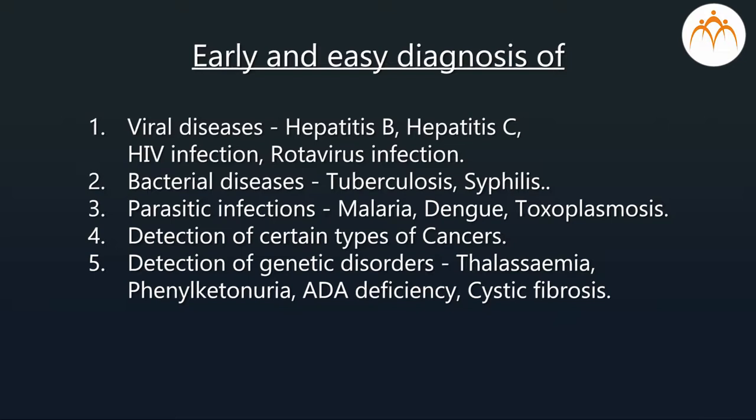Examples of genetic disorders detected include thalassemia, phenylketonuria, ADA deficiency, cystic fibrosis, and others.